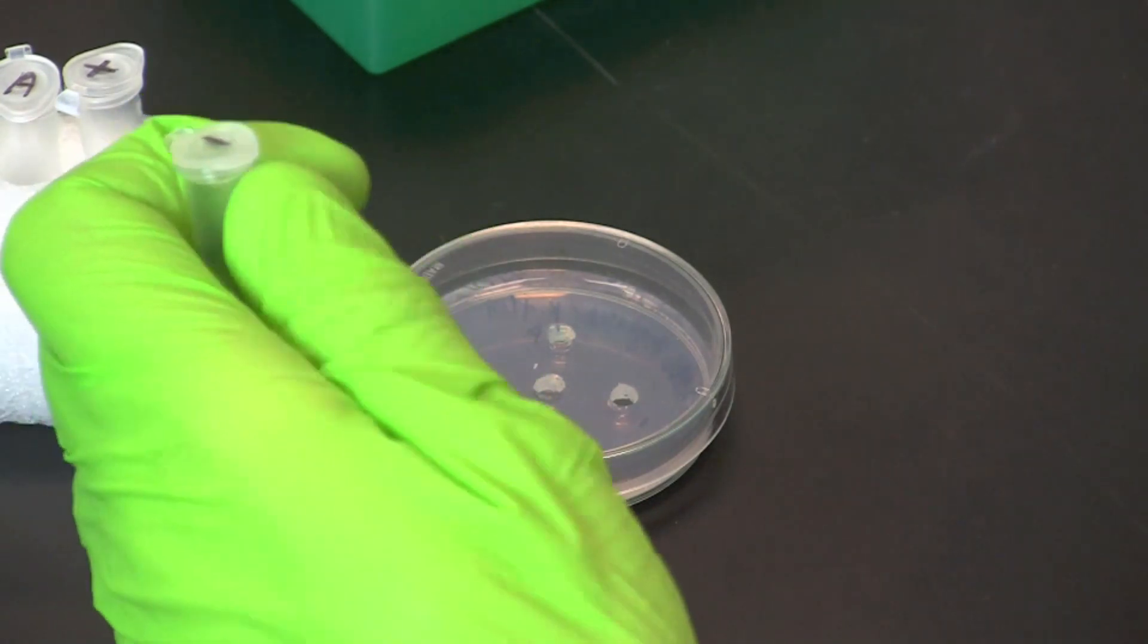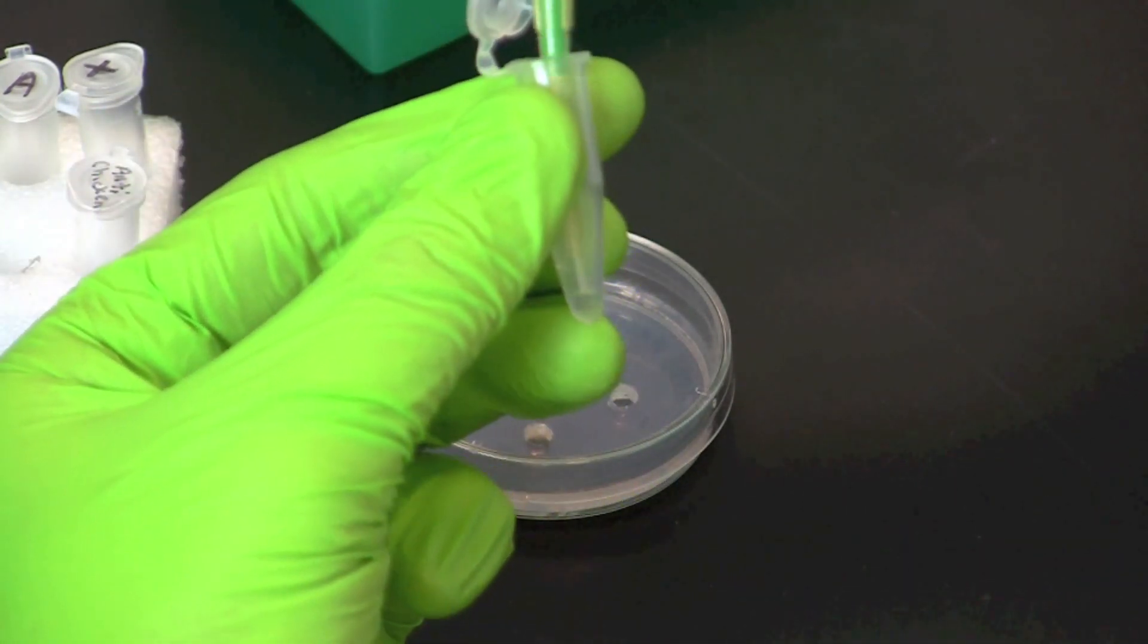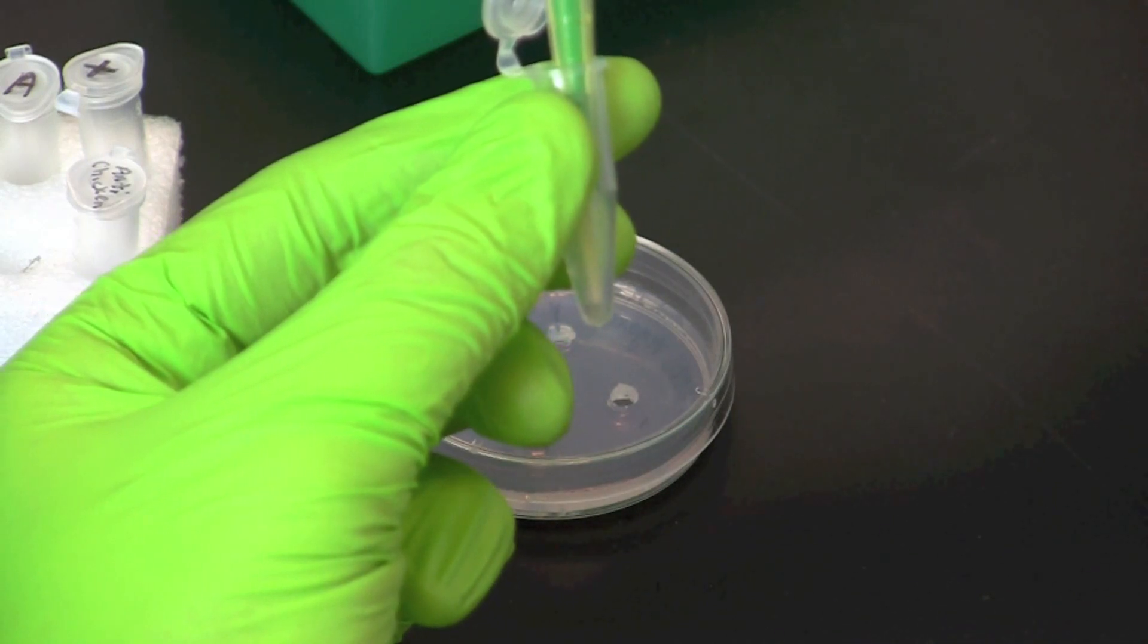Again, using a clean pipette tip, pipette 15 microliters of negative control into the hole labeled minus.